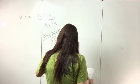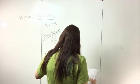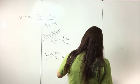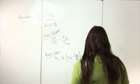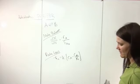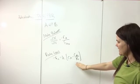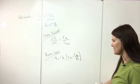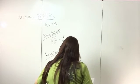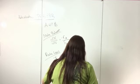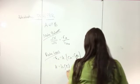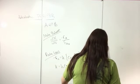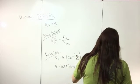Then the rate law: minus r_A equals K times C_A minus C_B over K_C. Since we have potential temperature changes, the reaction rate constant depends on temperature, so K equals K1 at some reference temperature, multiplied by the exponential of E over R times (1/T1 minus 1/T).